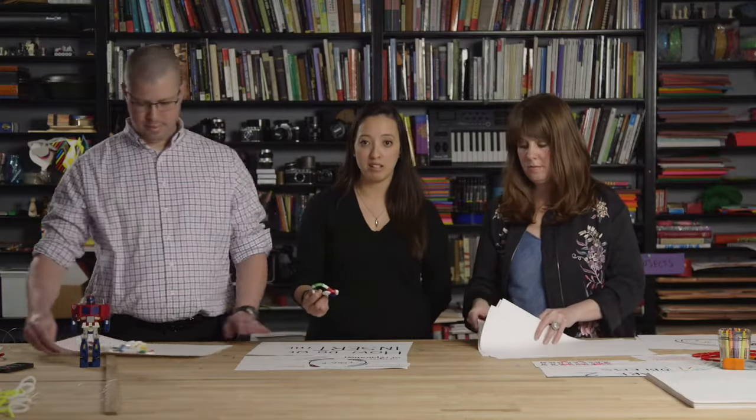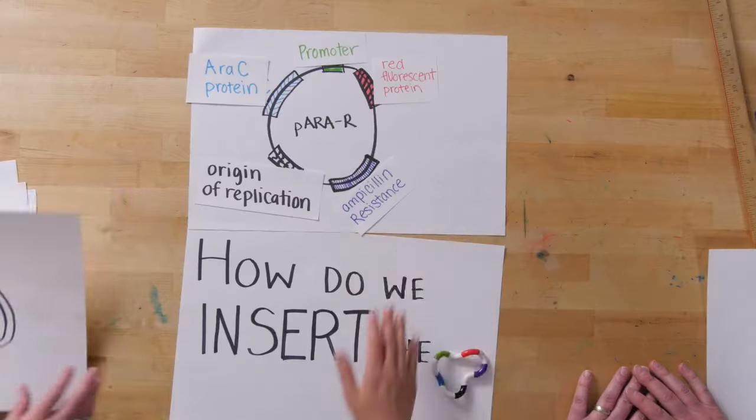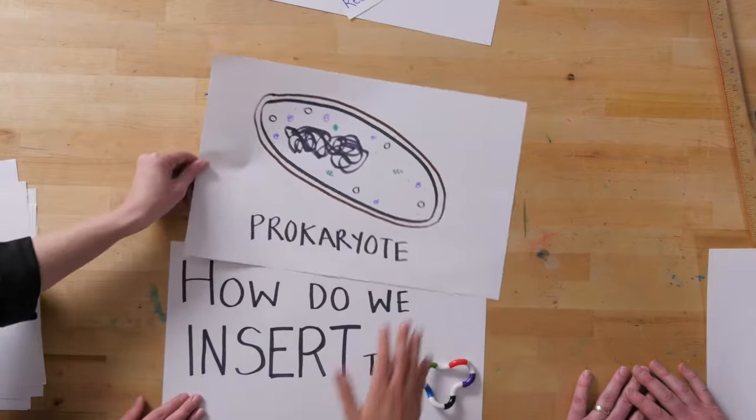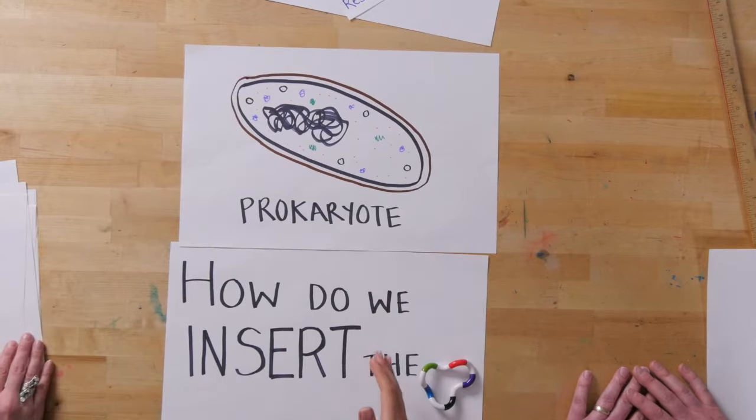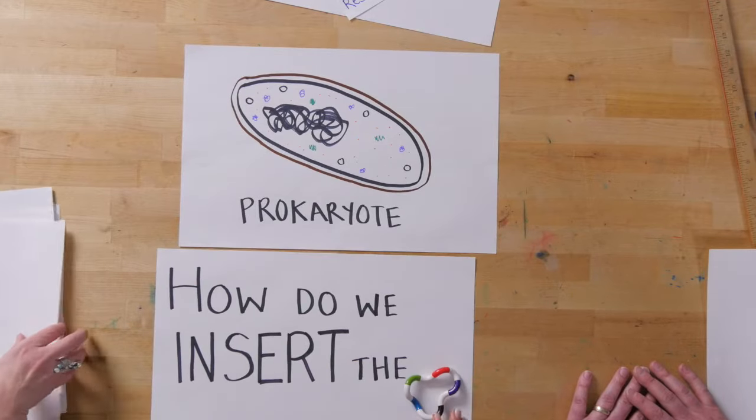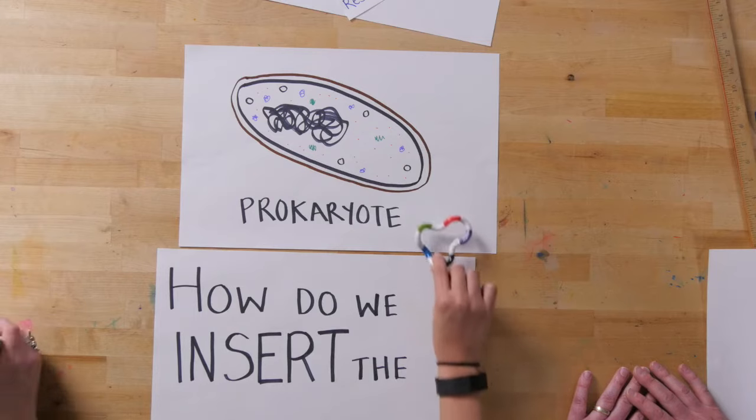If we do get the plasmid we want, how do we insert the plasmid? We want to insert it back into our cells, into our prokaryotes. In this lab, we're using E. coli as our prokaryote of choice, and now we need to figure out how do we get this plasmid in.